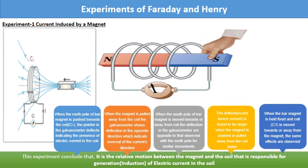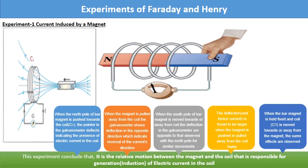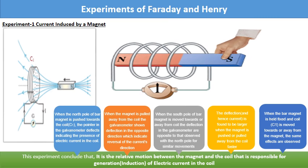Instead, when the bar magnet is held fixed and coil C1 is moved towards or away from the magnet, the same effects are observed. This experiment concludes that, it is the relative motion between the magnet and the coil that is responsible for generation of electric current in the coil.